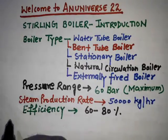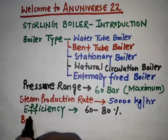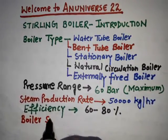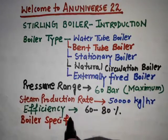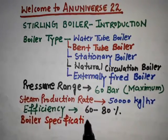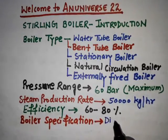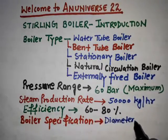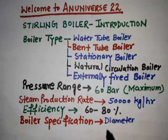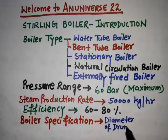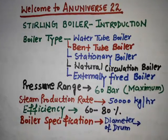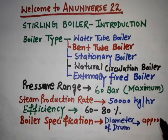Now I want to discuss some specifications of the Sterling boiler. When talking about its specifications, we need to know the diameter of the drum. Generally, four drums are used in the Sterling boiler, and the diameter of each drum is approximately 2 meters.